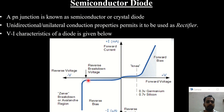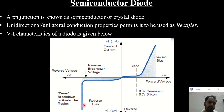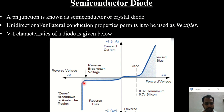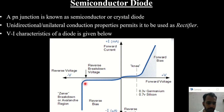When the reverse voltage is increased beyond a particular value, the diode abruptly starts to conduct. This is the region where the diode is damaged. This phenomenon is due to the avalanche effect and is called avalanche breakdown.